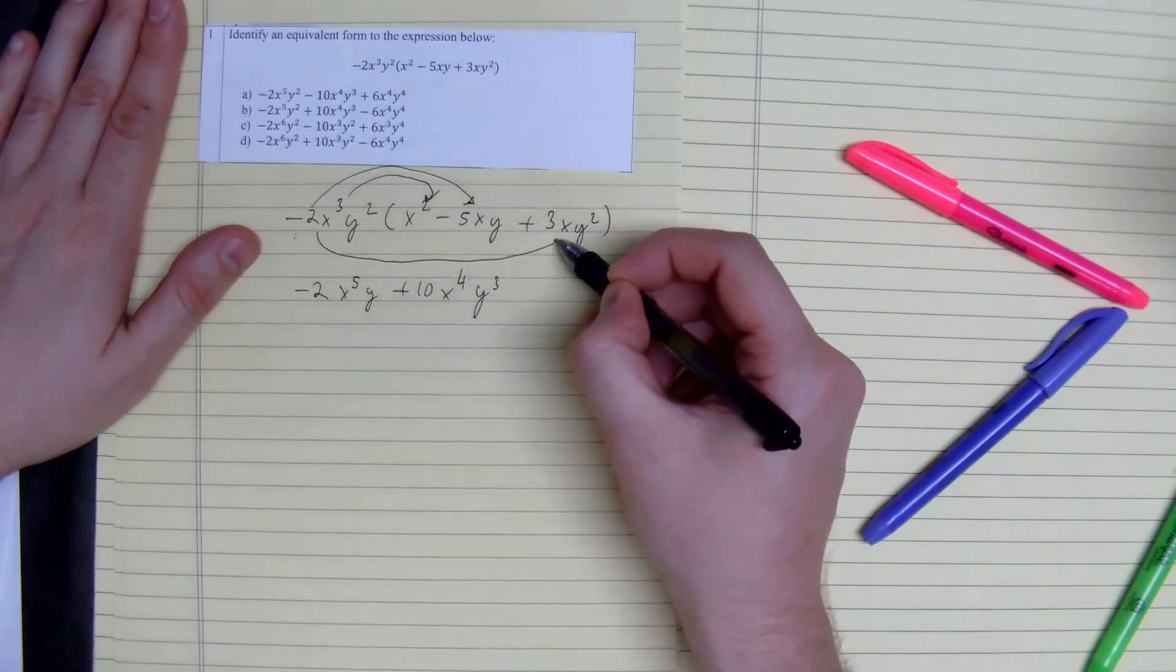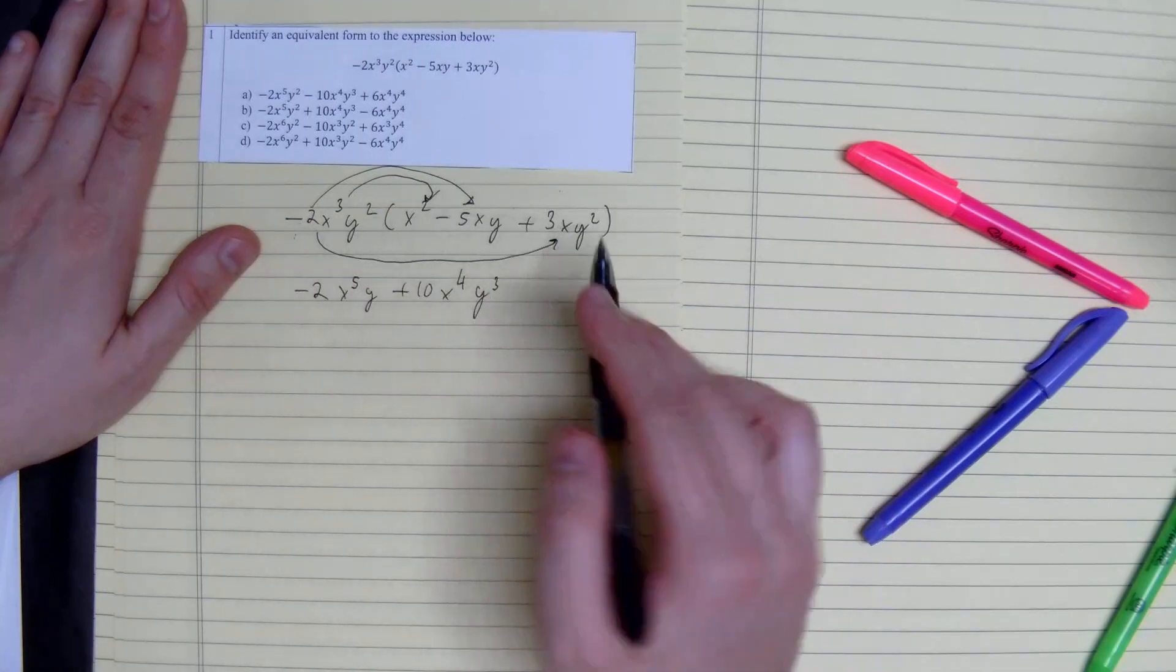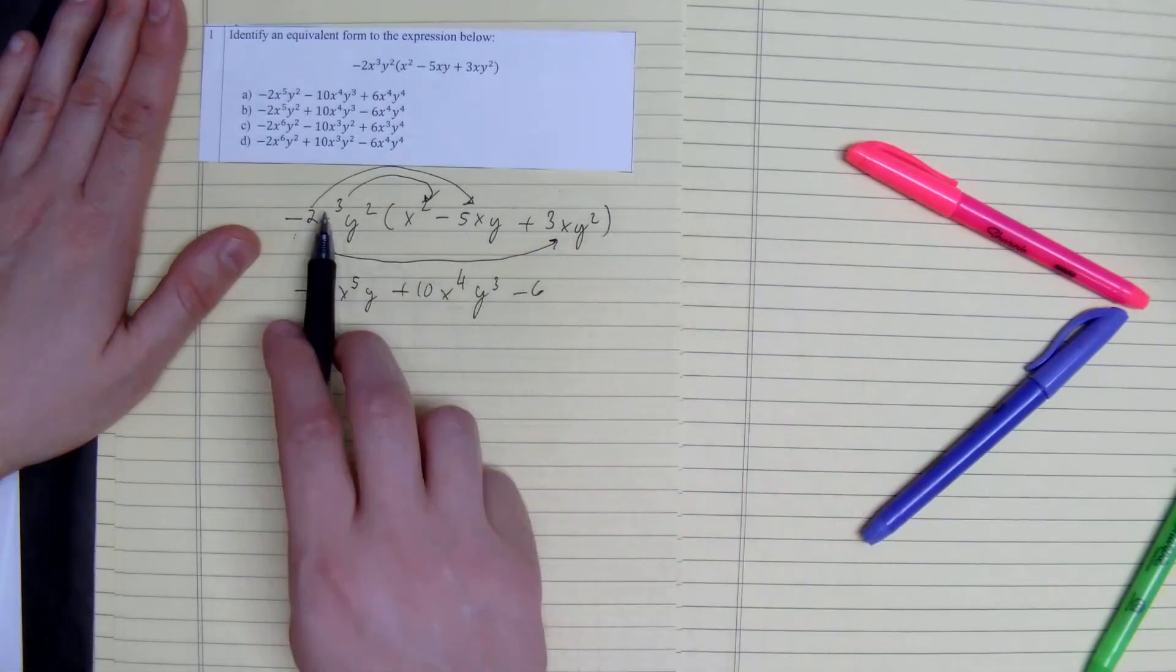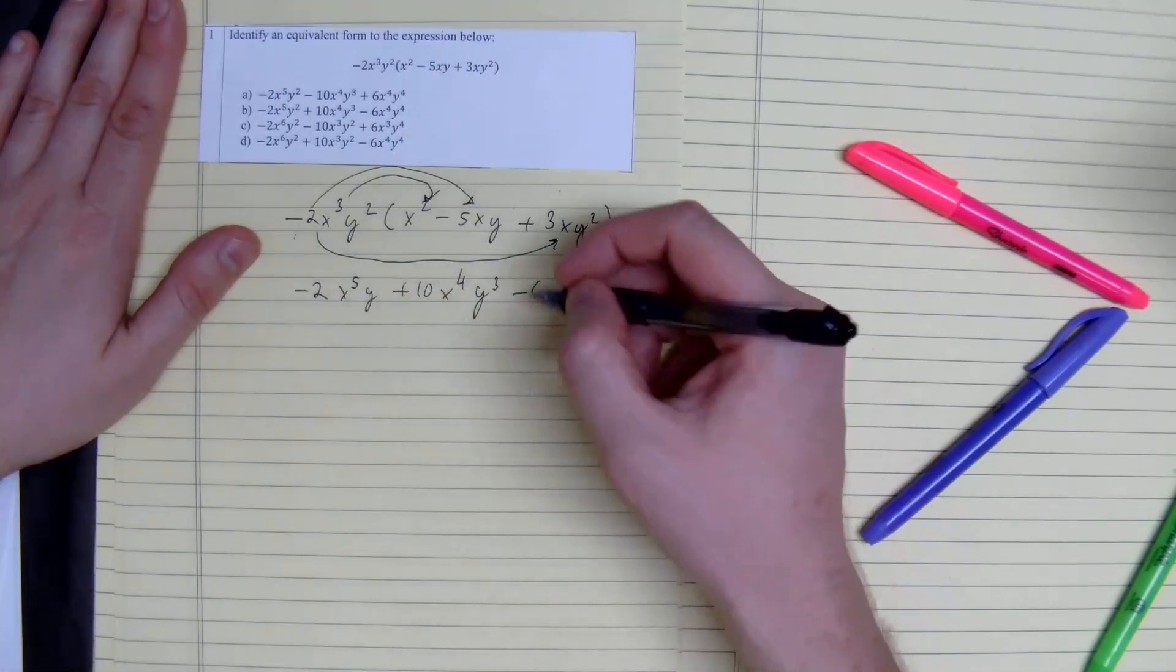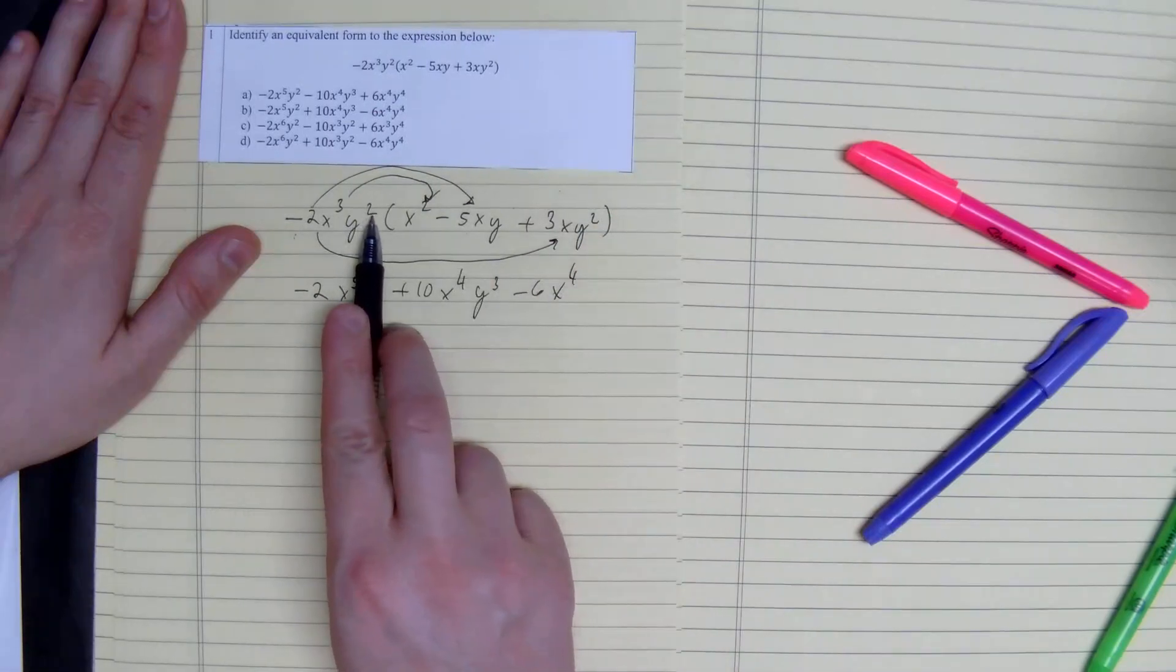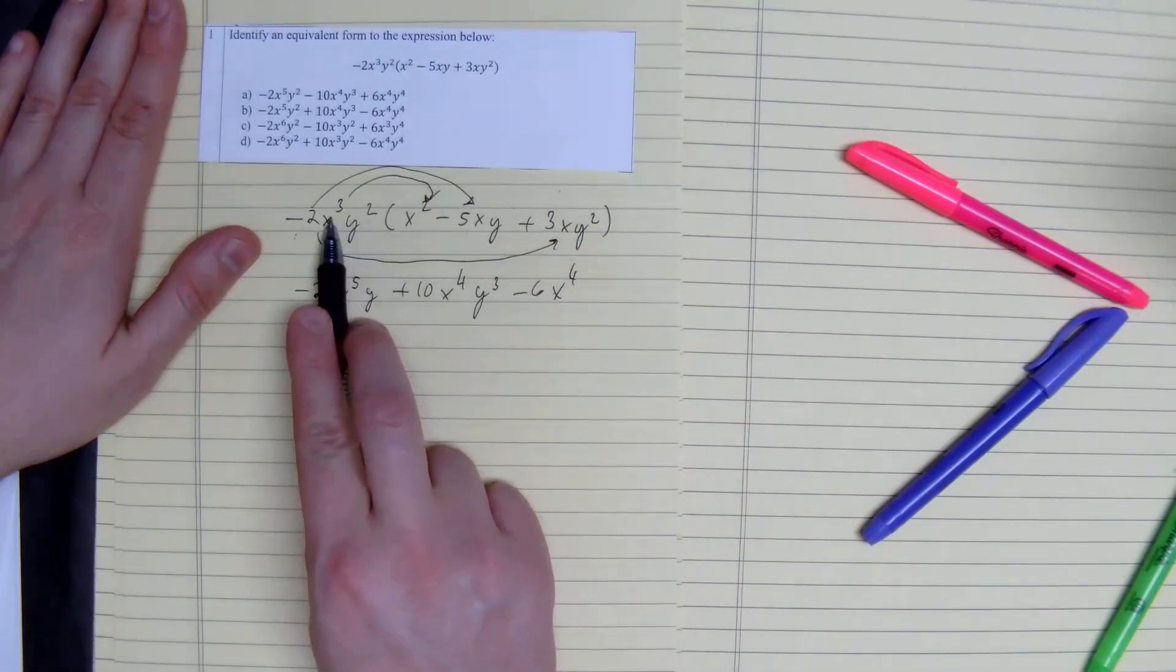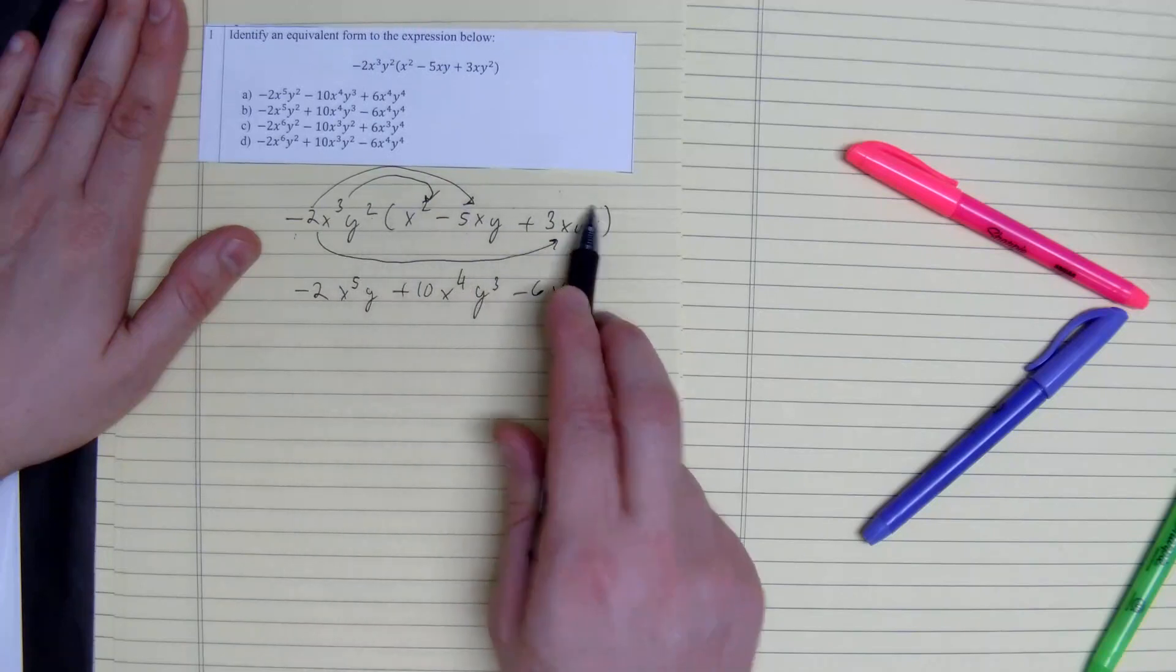And then we do it one more time. Negative 2 times 3 gives you negative 6. x cubed times x to the 1 gives you x to the 4th. And then, so 3 plus 1 is 4. And then 2 plus 2 is 4.